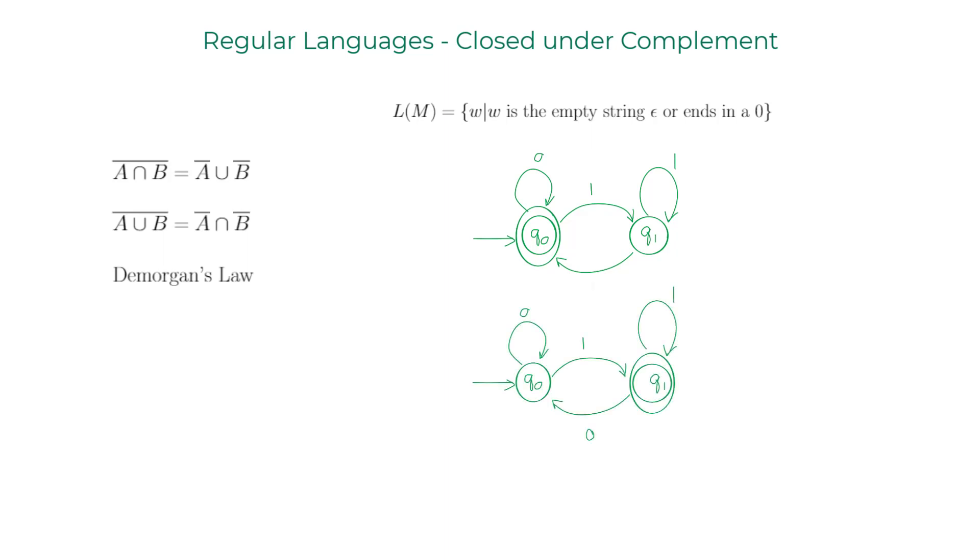Following the theorem, I'll get the complement of that language by changing the final states to Q minus F. What's left is Q1, so I'll make that the accepting state and remove the accepting state status for Q0. This DFA accepts the language following DeMorgan's law: it is not the empty string epsilon and does not end with zero. Regular languages are closed under complement.